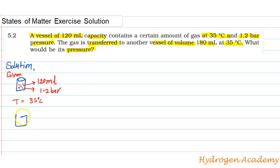The gas transfers to another vessel which capacity is 180 mL at 35 degrees Celsius, so temperature remains the same and the capacity of this vessel is 180 mL. What would be the pressure of the gas in this vessel? P2 is what we're asking. Suppose 120 mL is V1 and this is P1, and this is V2 and this is P2.